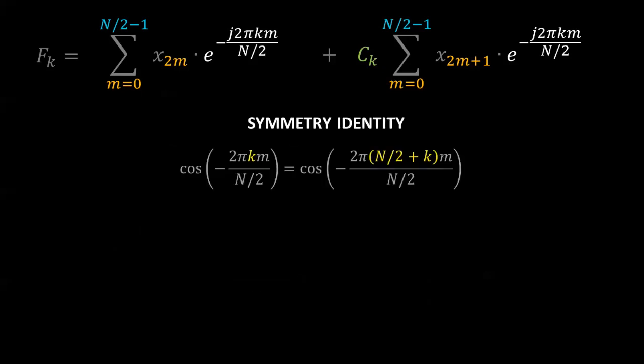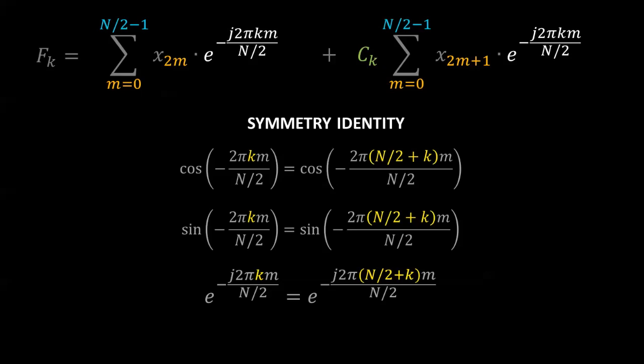This is what is called a symmetry identity, and it can be noted in the cosine, sine, and as a result the exponential terms. Because k runs from 0 to n, everything repeats after k equals n over 2, and the total number of operations is effectively halved.